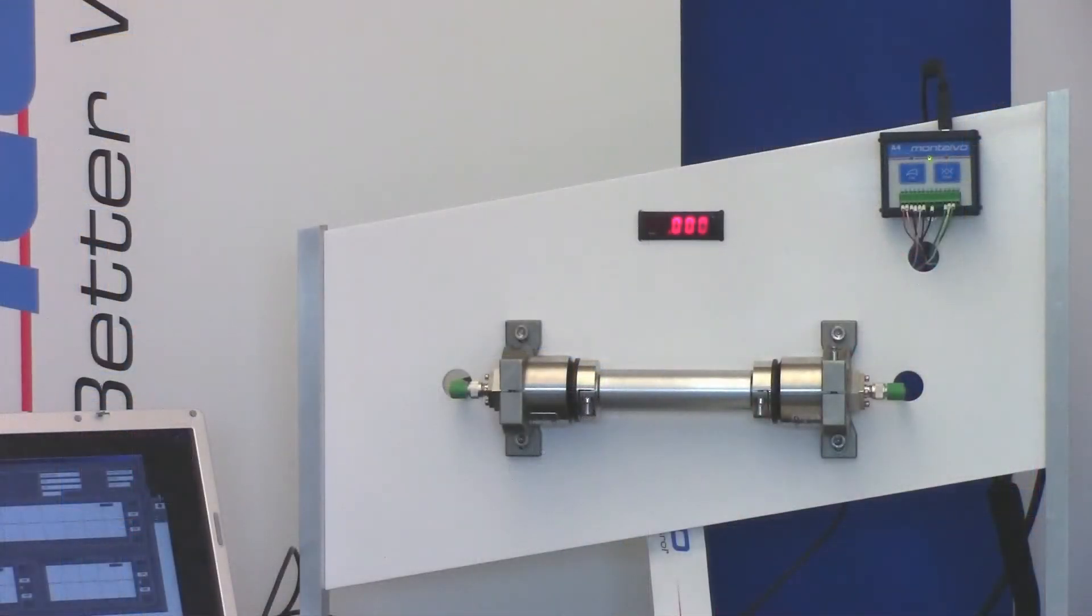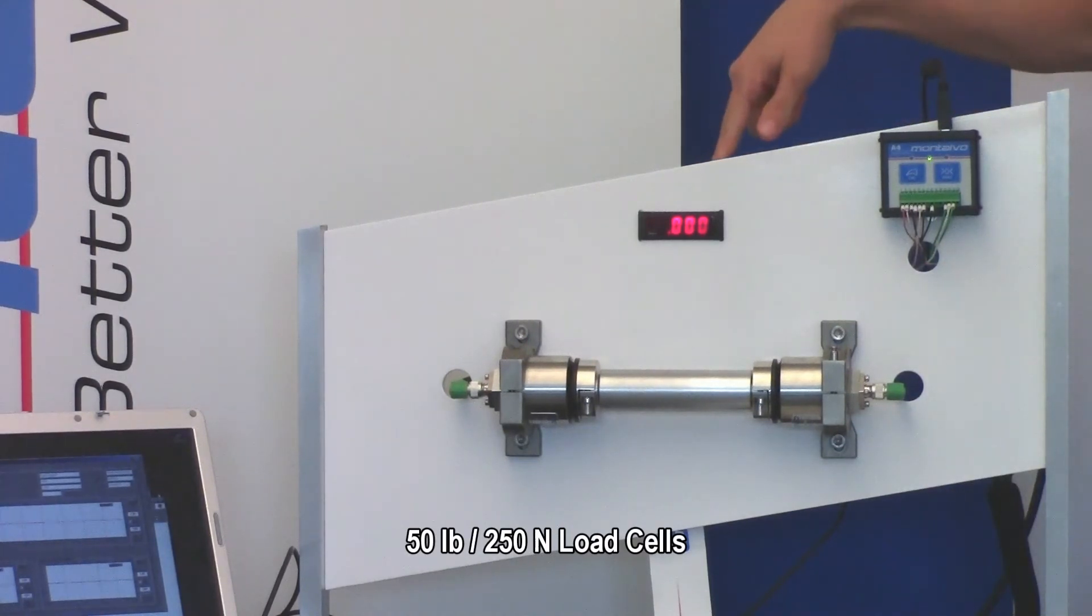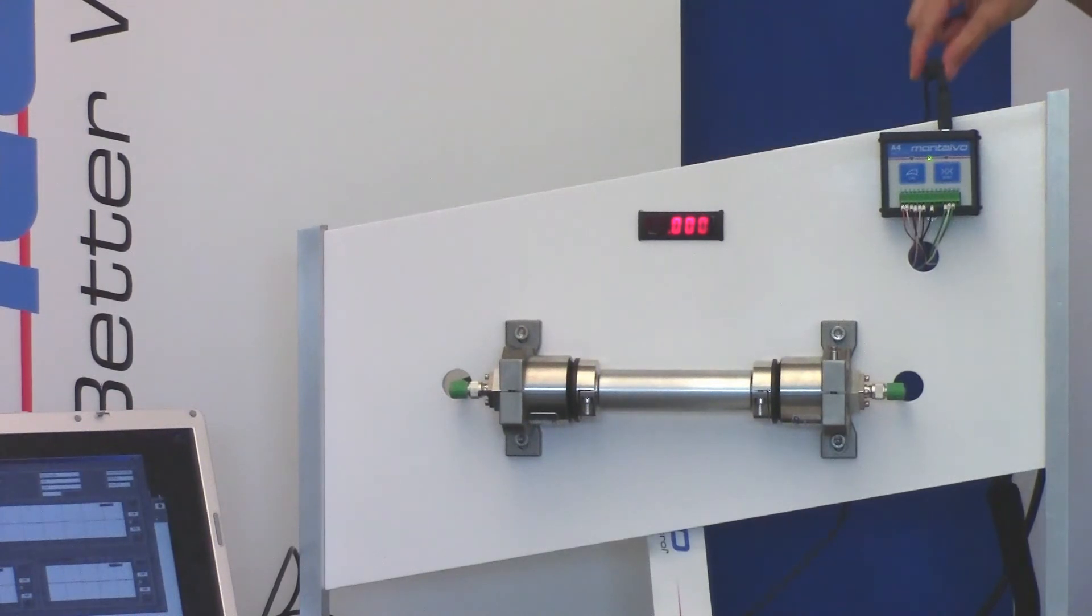So first, just to set things up here for you, I have a pair of 50-pound ES-series idler-style load cells in a split pillow block mount hooked up to a digital meter and an A4 amplifier, which is plugged into the laptop via the USB port, which comes standard on all A4s.